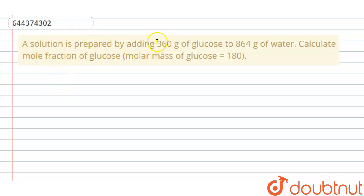The question is: a solution is prepared by adding 360 grams of glucose to 864 grams of water. Calculate mole fraction of glucose. The molar mass of glucose is 180.